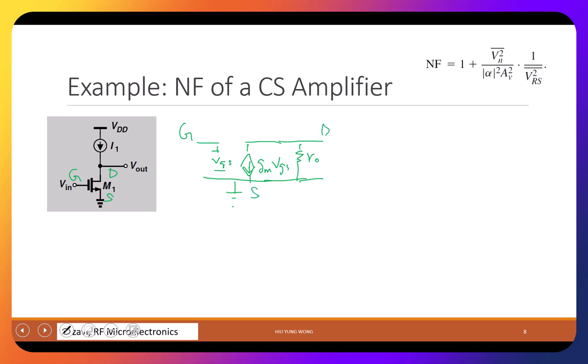What we are talking about is noise. The input is connected to a voltage source, but this voltage source must have a source impedance. In RF we're talking about RF — it must have output impedance. Let's say we decide on 50 ohms. Now what types of noise do we have for a transistor? We have two: gate resistor noise and channel current noise.